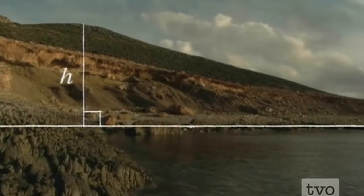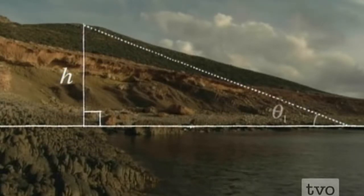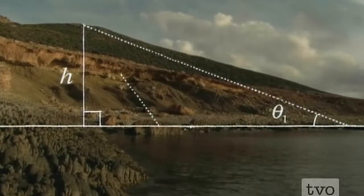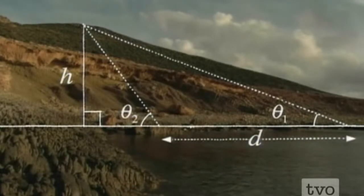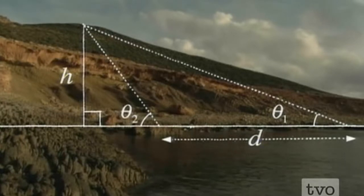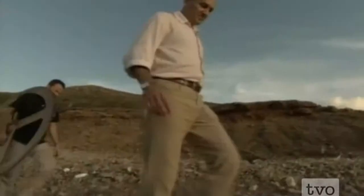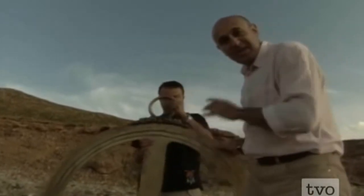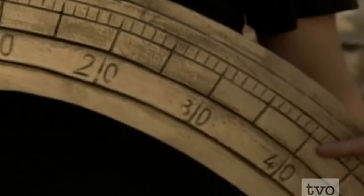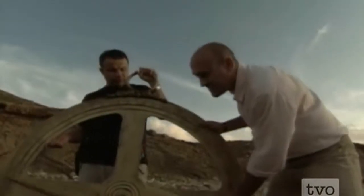Al-Biruni's first step was to work out the height of the mountain. He did this by going to two points at sea level, a known distance apart, and then measuring the angles from these points to the mountaintop. To measure the angle, Al-Biruni had to use a device like this called an astrolabe — basically a giant protractor with angles and degrees marked around the outside and a pointer to help determine his line of sight.